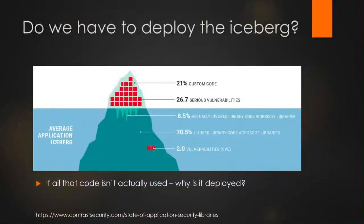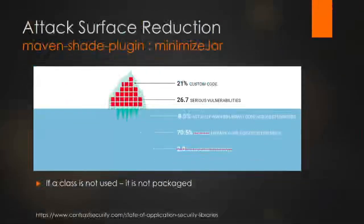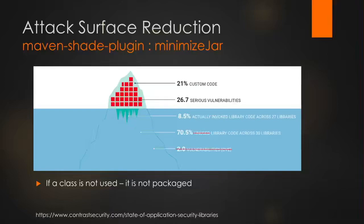Back to the iceberg: if 70% of the code is never executed, why are we deploying it? The Maven Shade plugin can actually analyze your application and say 'that class is not being used' — and throw it away so it's not part of the deployed jar. You can remove all of that 70% of the code, potentially removing vulnerabilities. That's why it's all defense in depth.